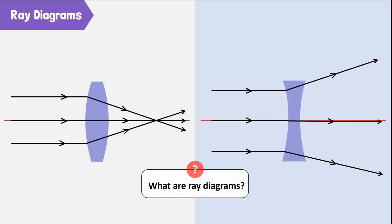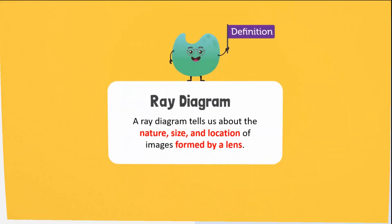So, what are ray diagrams? A ray diagram tells us about the nature, size, and location of images formed by a lens.